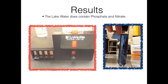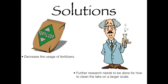The results showed that the lake water does contain both phosphate and nitrate. To solve our problem, the surrounding homes should reduce their amount of fertilizer they use, as this will help the water become better. Further research is needed to remove the dirt on a large scale, because we were only able to clean it on a small scale.